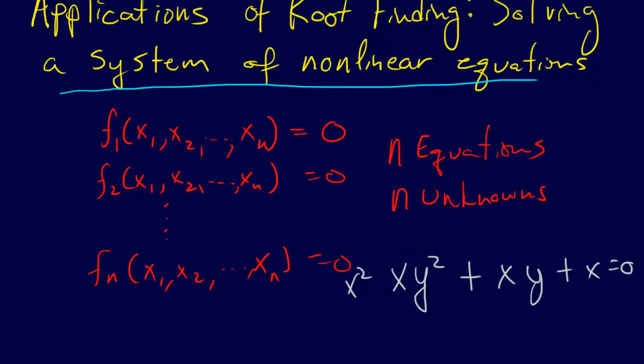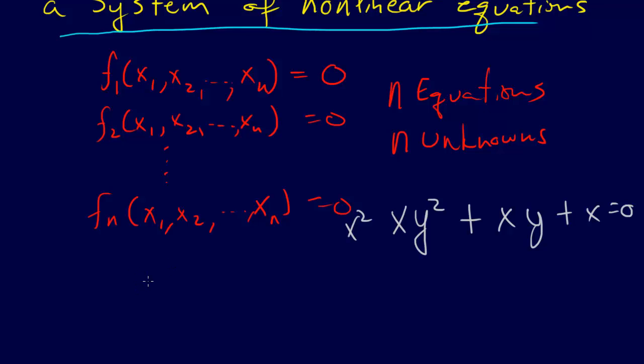As opposed to linear. See, a linear equation is an equation that can be represented or written as some coefficient. So let's call it a₀x₀ plus a₁x₁ plus a₂x₂ plus dot dot dot plus aₙxₙ.